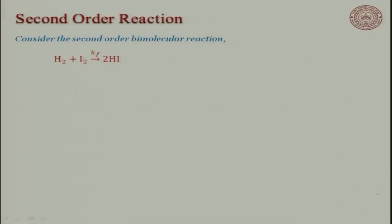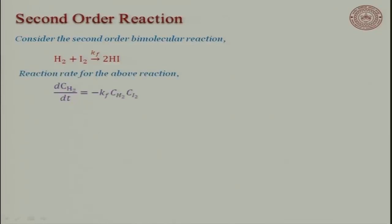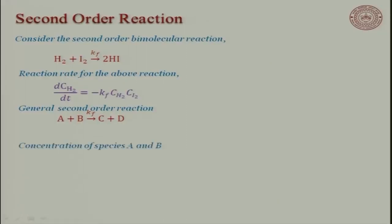Now let us look at second order reactions. Let us say hydrogen is reacting with iodine going to two molecules of hydrogen iodide. The reaction rate is: d[H2]/dt = −Kf·[H2]·[I2]. For a general second order reaction A + B → C + D with forward rate constant Kf, the reaction rate is: −d[CA]/dt = Kf·CA·CB.